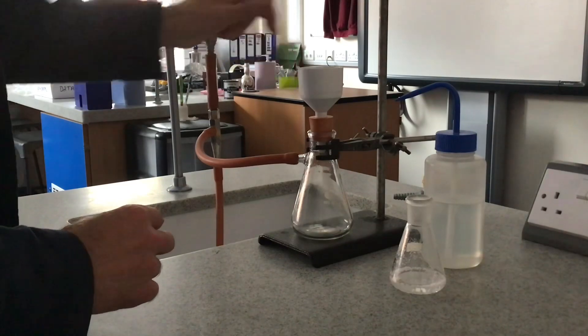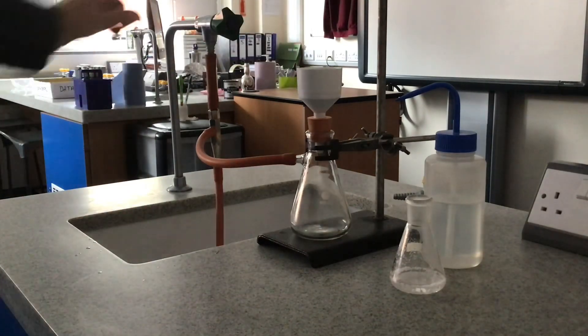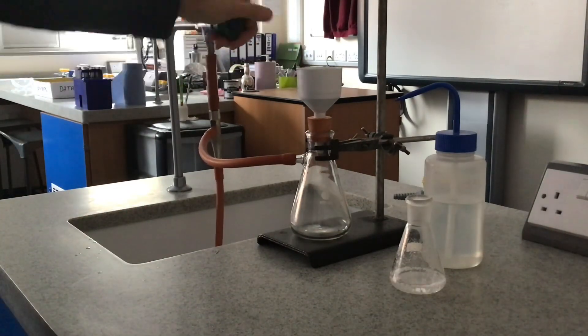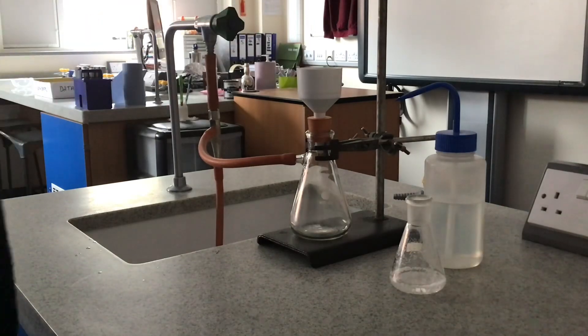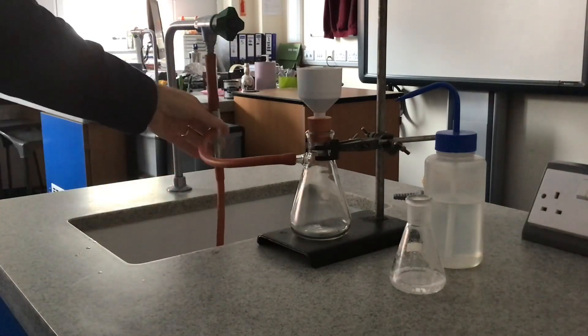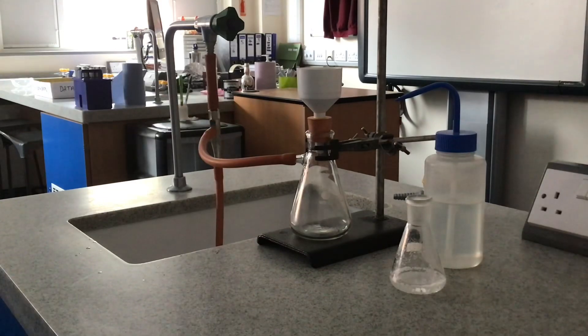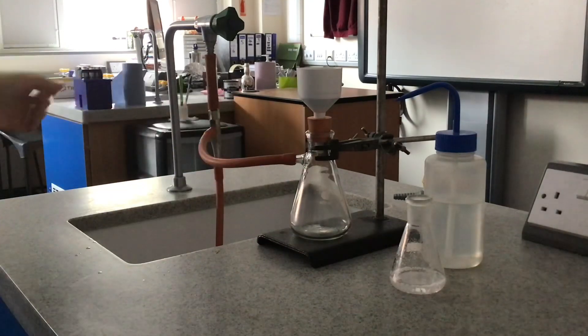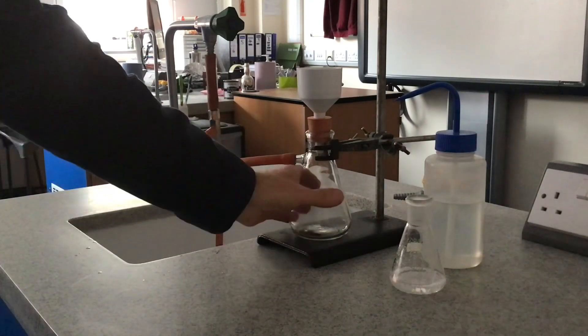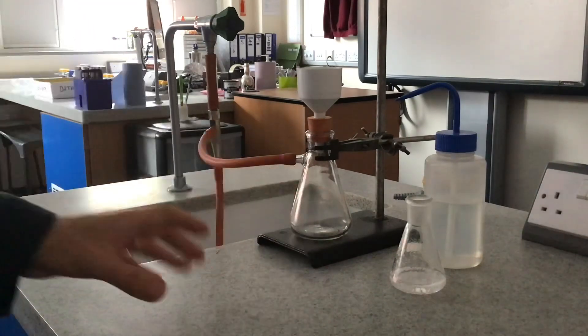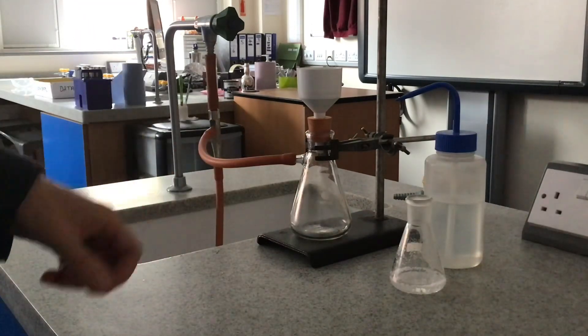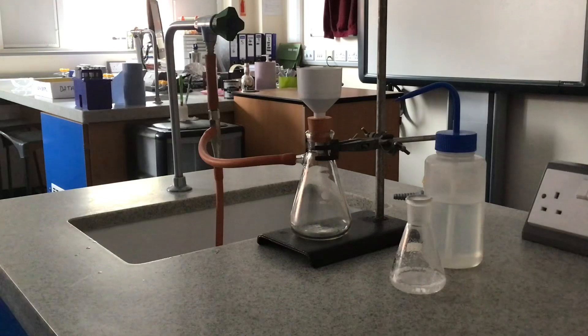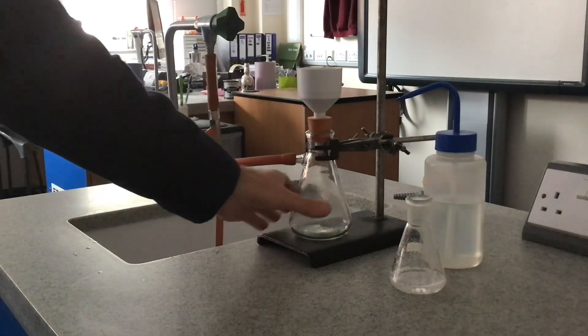I'll just turn the water on now. I'll explain how this works. We've got water rushing through in this vertical direction through this pump here. It's pulling air out of the flask, so we're creating a vacuum inside here. We've got a pressure gradient like I said at the start. We've got high pressure up here, low pressure in the Buchner flask.